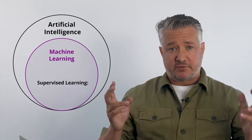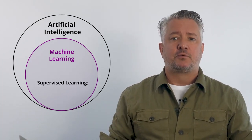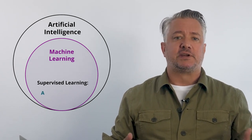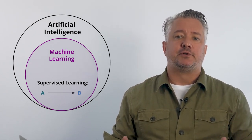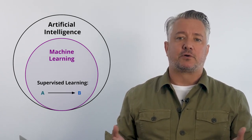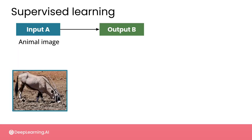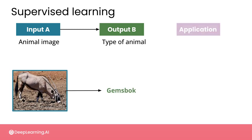The most commonly applied machine learning algorithms are so-called supervised machine learning algorithms, where the goal is to map some input — which I'll call A — to an output — which I'll call B. For a more concrete example, if your input A is an image of an animal, your output B might be the type of animal. An application for identifying what's in an image like this would be an example of image recognition, and you'll see this in action in course two.